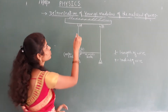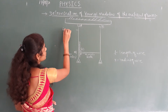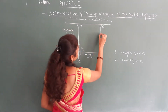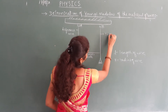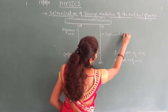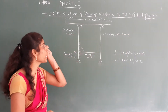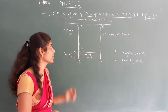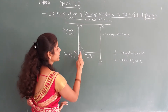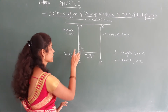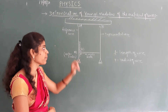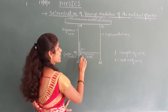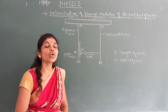Wire A is considered as the reference wire and wire B is considered as the experimental wire. For the reference wire, a meter scale is attached, and for the experimental wire B, a vernier scale is attached. Both scales are attached in order to record the readings.